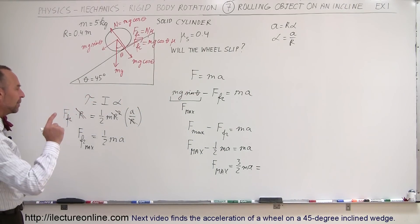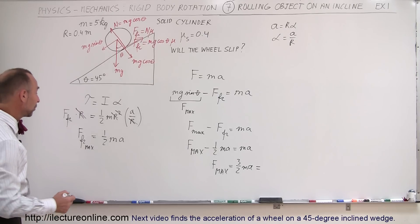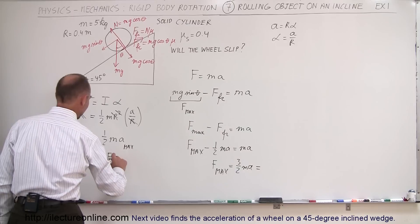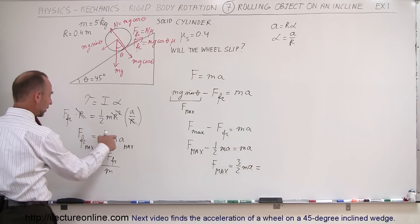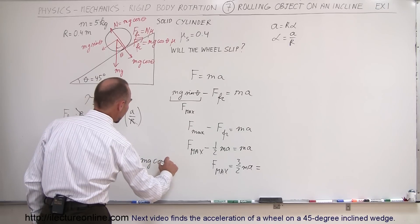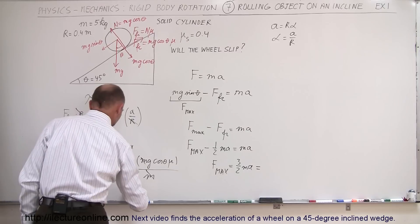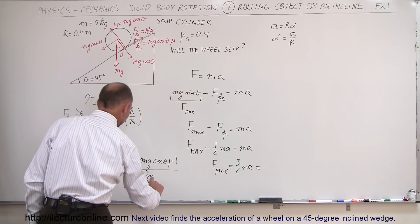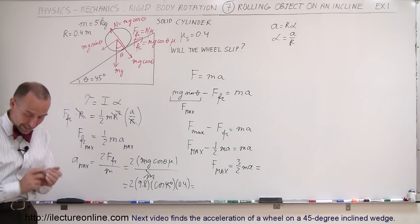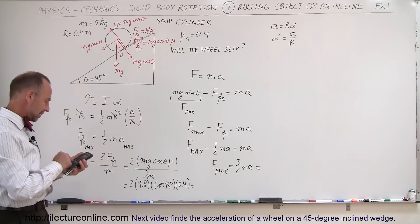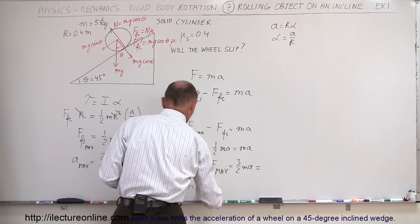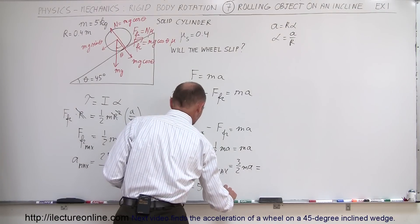To find the maximum acceleration, we use: a_max = 2 times the maximum friction force divided by mass. The maximum friction force is mg cosine theta times mu, so: a_max = 2g cosine theta times mu. Plugging in: 2 × 9.8 × cos(45°) × 0.4 = 5.54 m/s². So the maximum acceleration the torque can support is 5.54 meters per second squared.